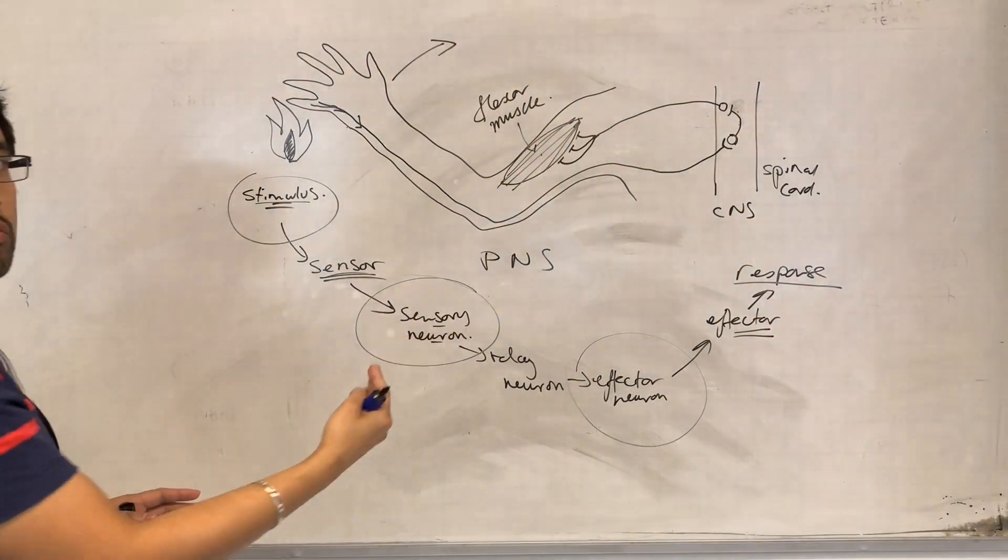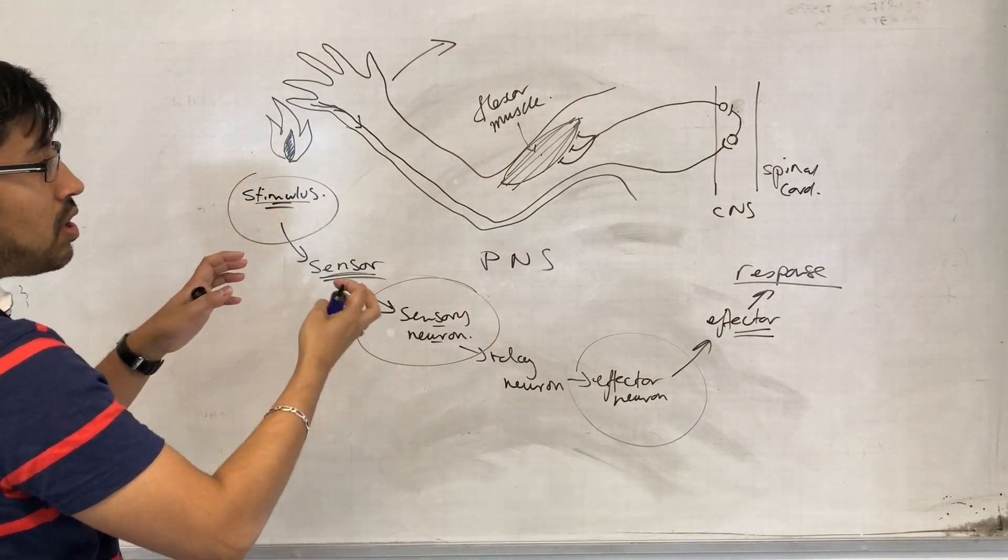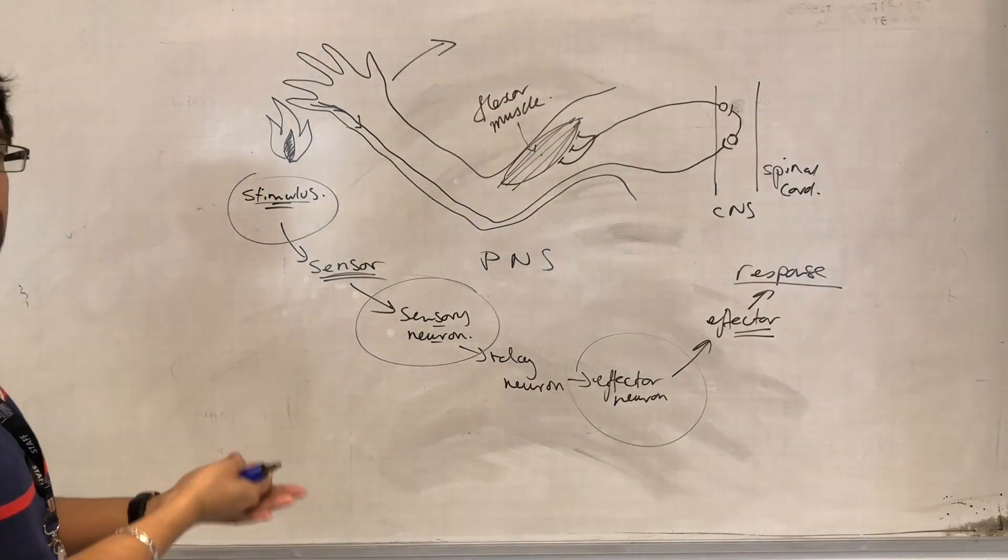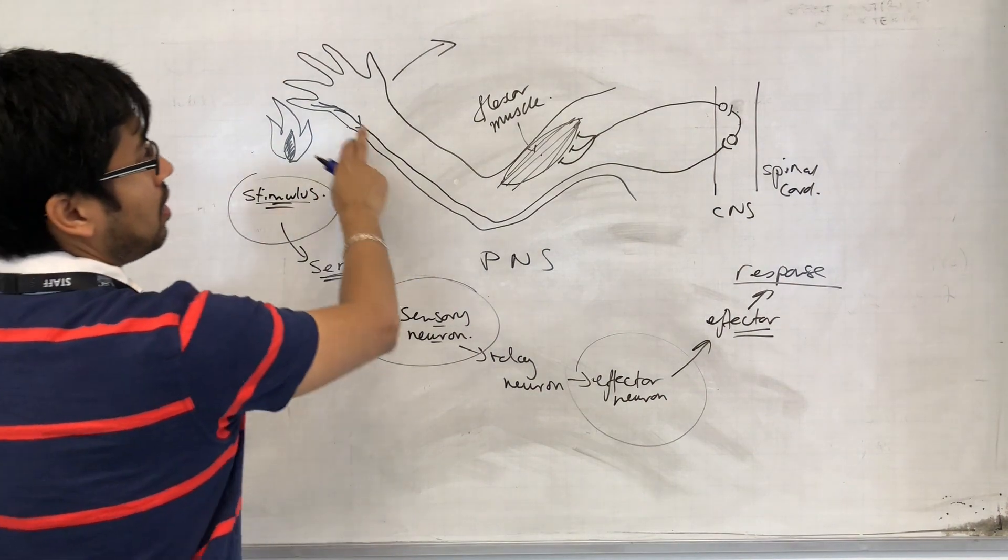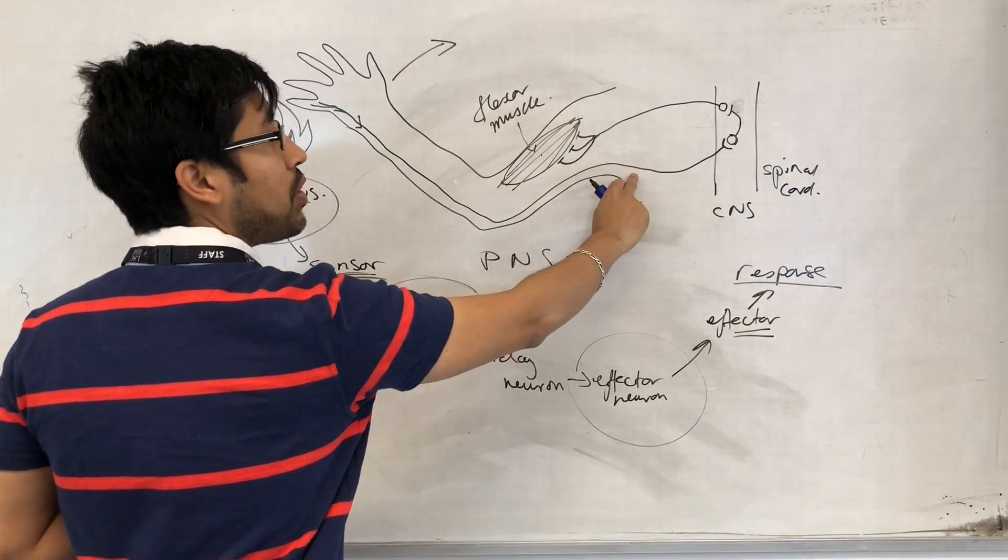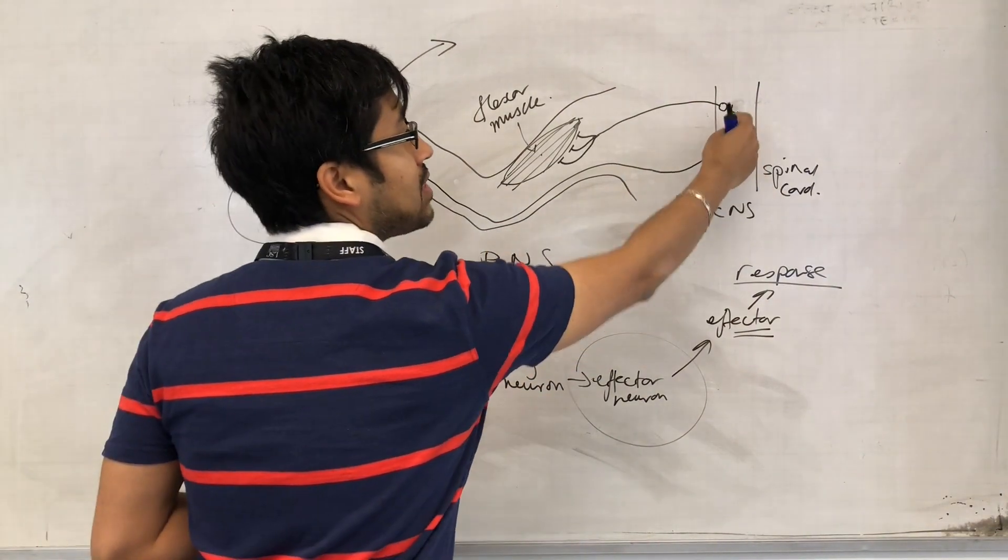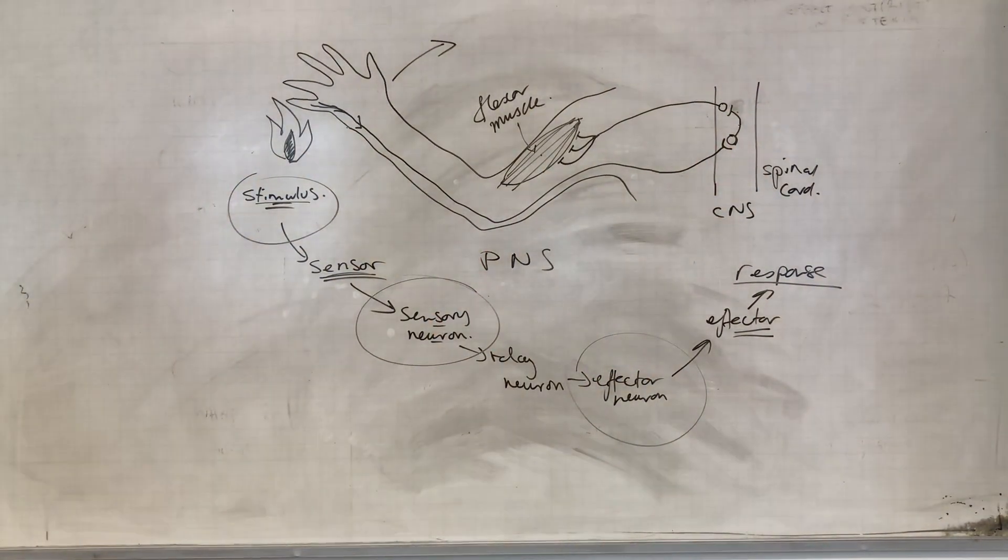Now that we understand the role of the neurons, we can start looking into what the nature of these neurons are and what the nature of the impulse is in terms of resting and action potentials. And again, how does the impulse from one neuron result in an impulse in another neuron? That's essentially what's happening at the synapses. So that would be next.